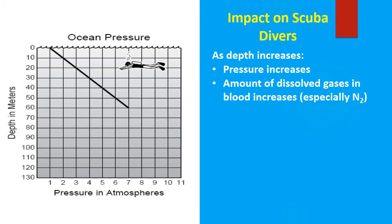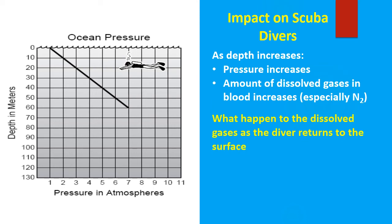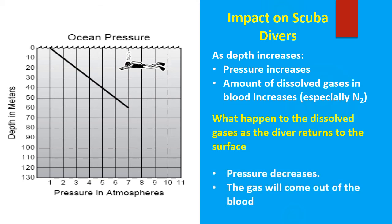Now let's look at the impact on scuba divers. As you see from the graph, as depth increases, pressure also increases. That means the amount of dissolved gases in the blood and the bloodstream will also increase. Now as a diver ascends, the pressure is going to decrease, solubility of the gases decreases, and they are released from the bloodstream to be exhaled. Now if the scuba diver returns to the surface too quickly, these gases will rapidly fill the tiny air sacs called alveoli in the lungs, filling them under high pressure, causing them to swell and burst.